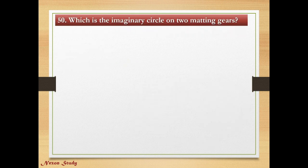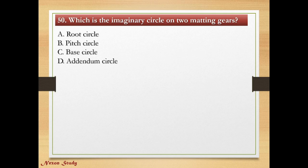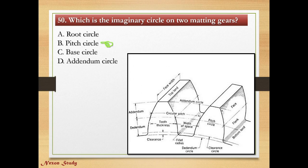Question: Which is the imaginary circle on two mating gears? Options: root circle, pitch circle, base circle, addendum circle. Correct answer is pitch circle. This is the pitch circle.